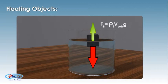Buoyant force equals weight of object. Density of fluid into volume submerged into gravity equals density of object into volume of object into gravity.